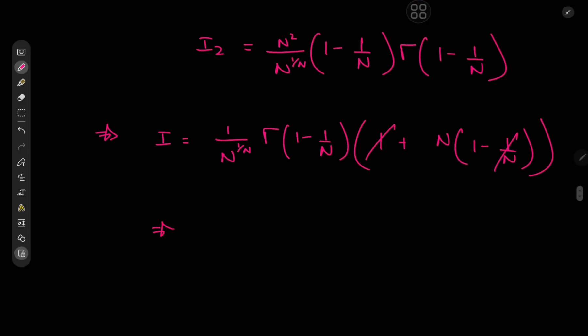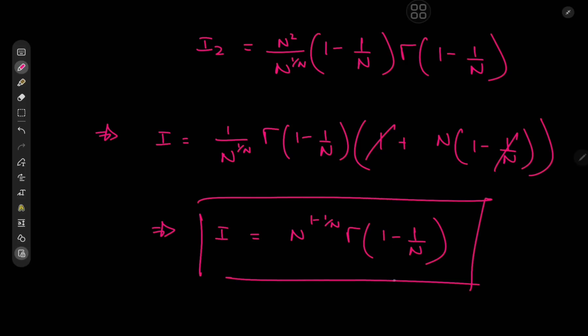So this implies that the target integral i equals n^(1−1/n) times Γ(1−1/n), which is a really cool result. It's quite beautiful that such a monstrous nested integral has such a beautiful closed form expressed in terms of the parameter n, which is a positive integer.